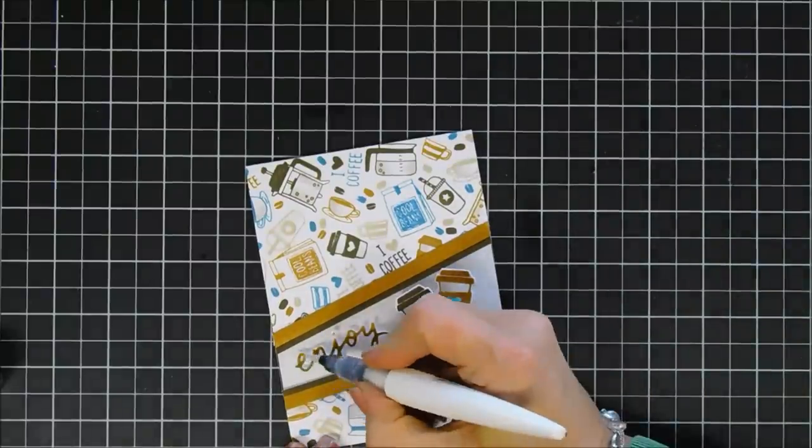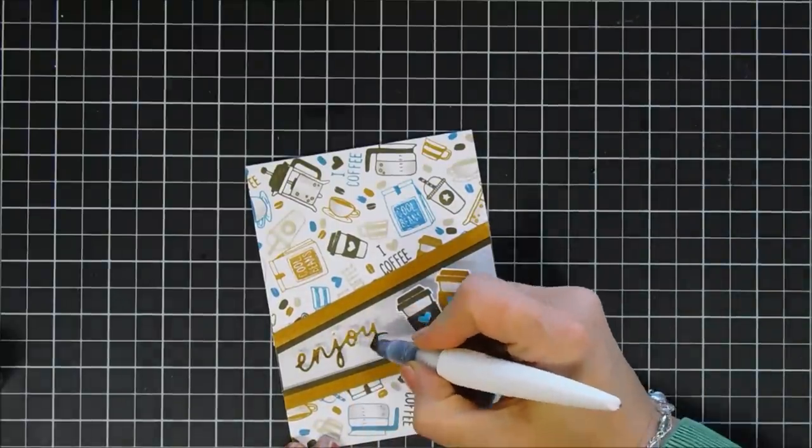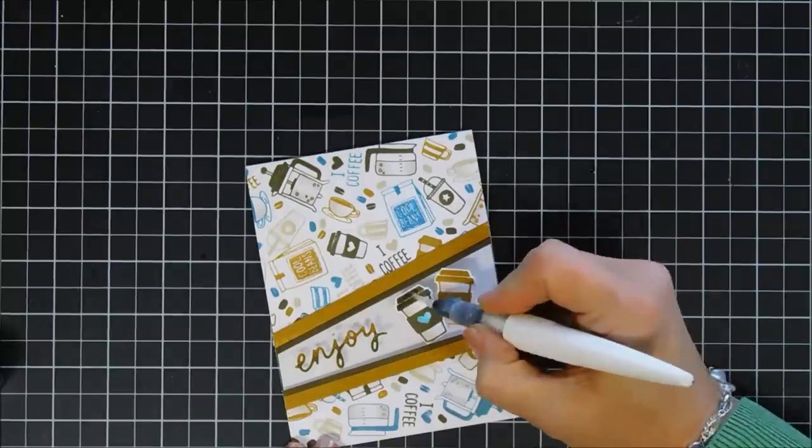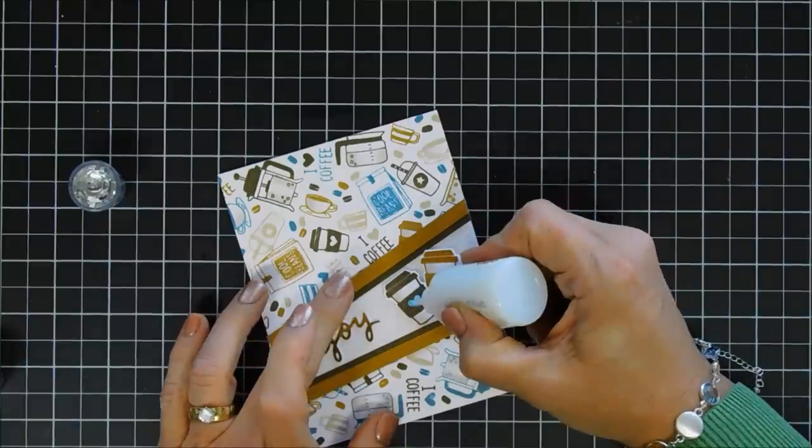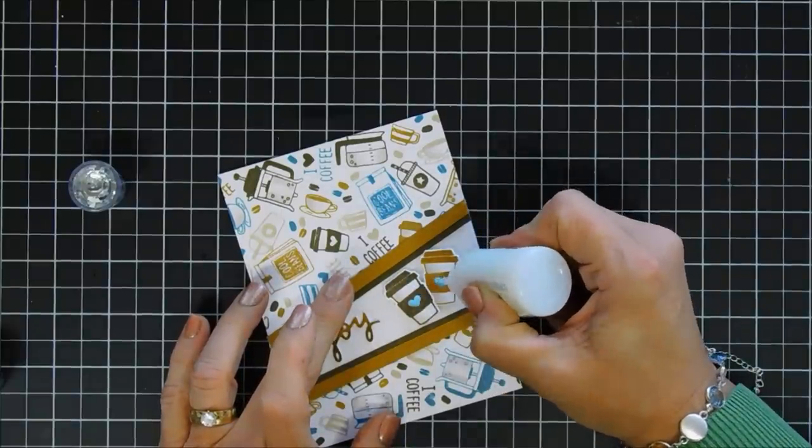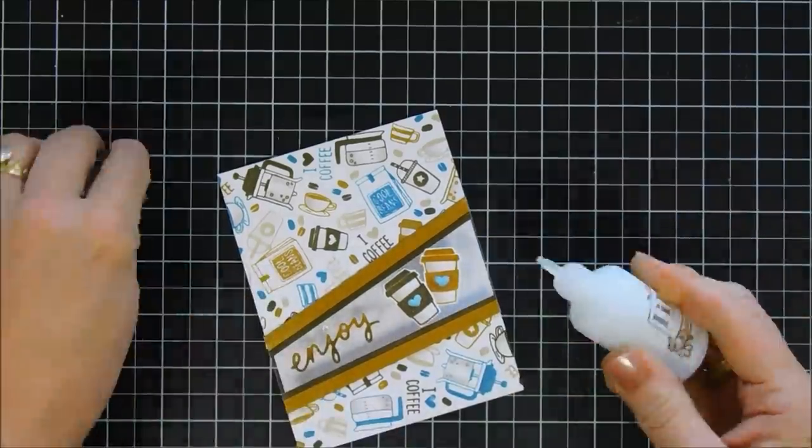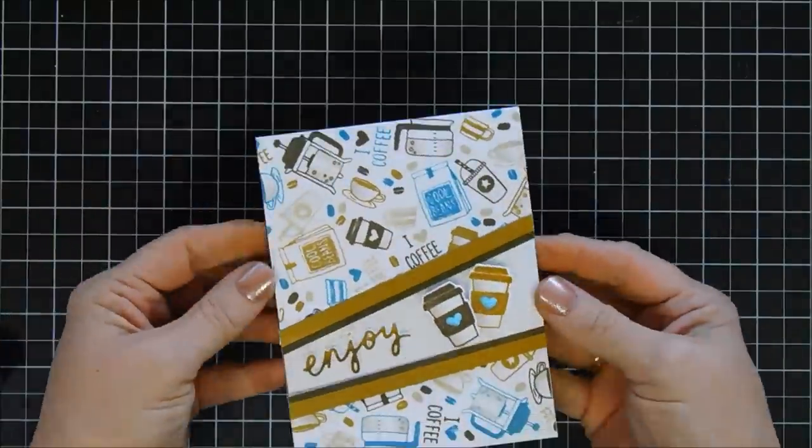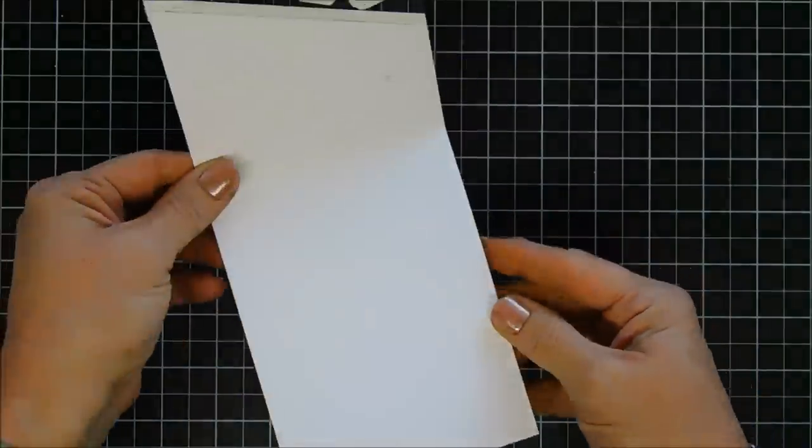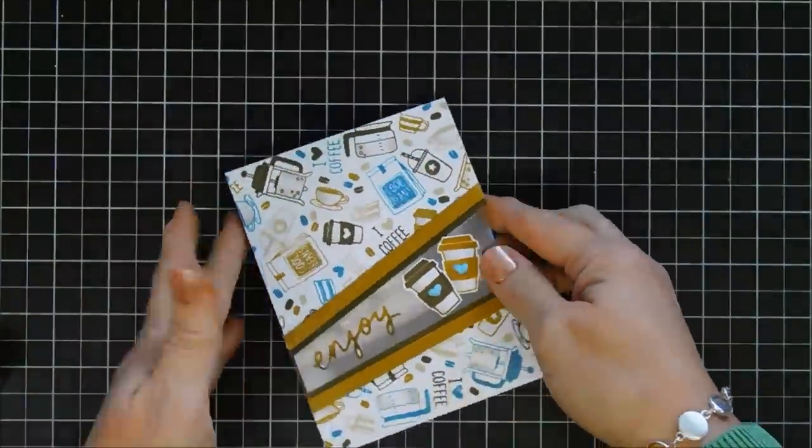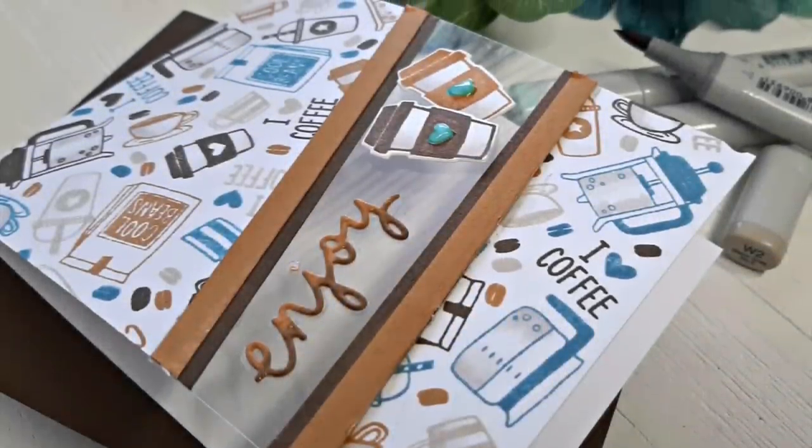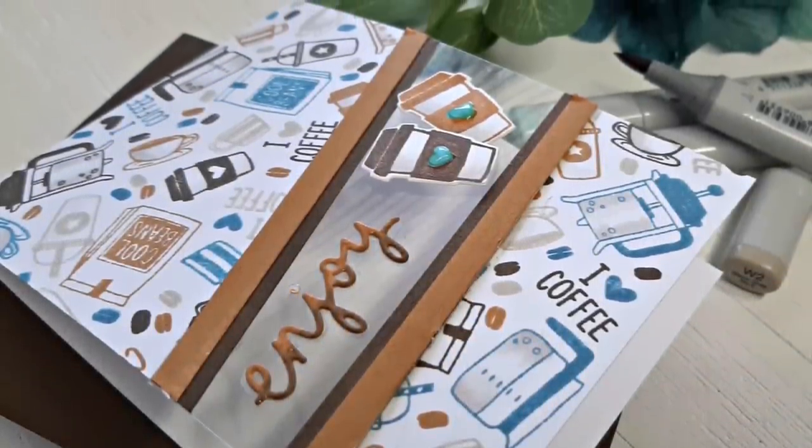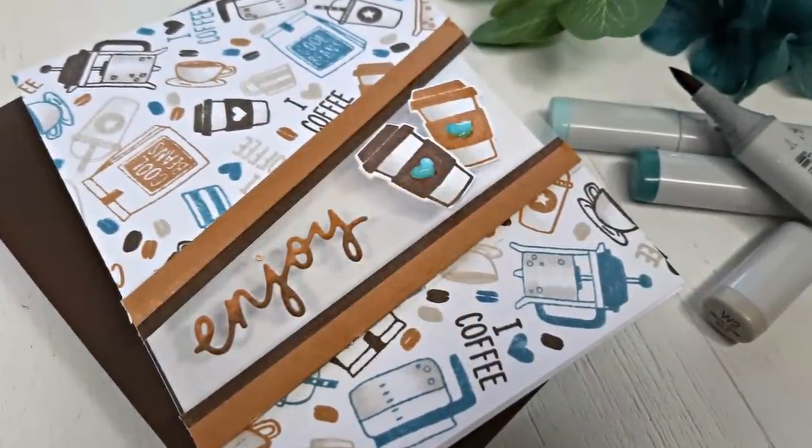I'm going to sparkle up the word enjoy with my Nuvo Aqua Shimmer Pen along with my cup. Then I'm going to add some Nuvo Morning Dew drops—these are like glossy accents. I'm going to place a little bit of shininess on the hearts of my coffee mugs. That completes my project for today guys, something a little different with that window in the front. I love the turnabout, it's so fun. I had a blast. I want to thank you so much for joining me. I wish you a lovely day and we will see you again soon. Bye bye.